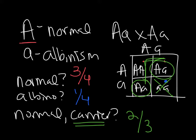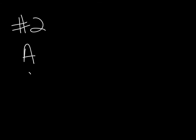Remember, carriers always look normal — otherwise they wouldn't be called carriers because they would be affected. Problem number 2 says in purple people eaters, one horn is dominant and no horns is recessive. I'm just going to continuously use A's — they're easy because you can tell the uppercase and lowercase pretty easily from each other.